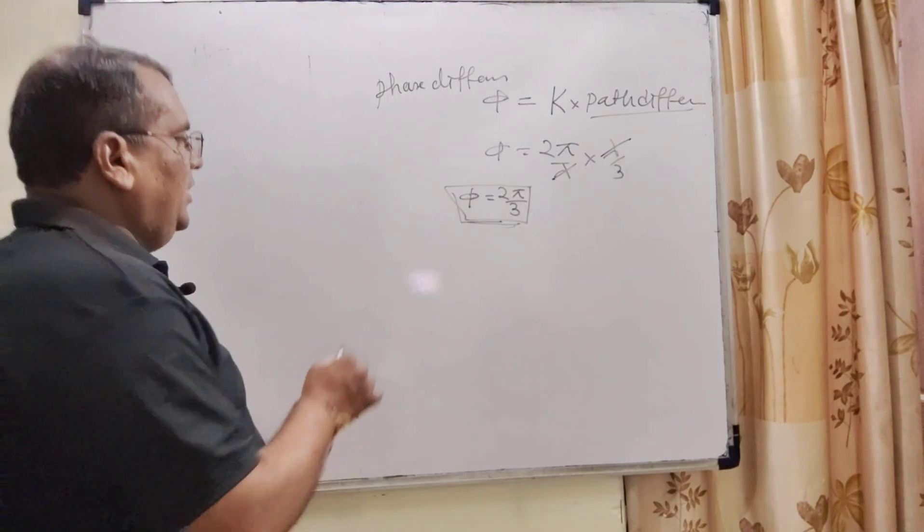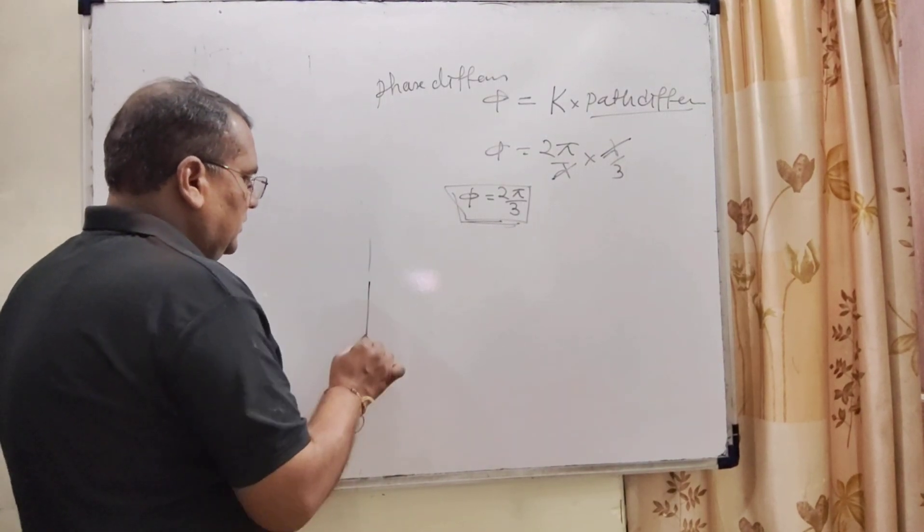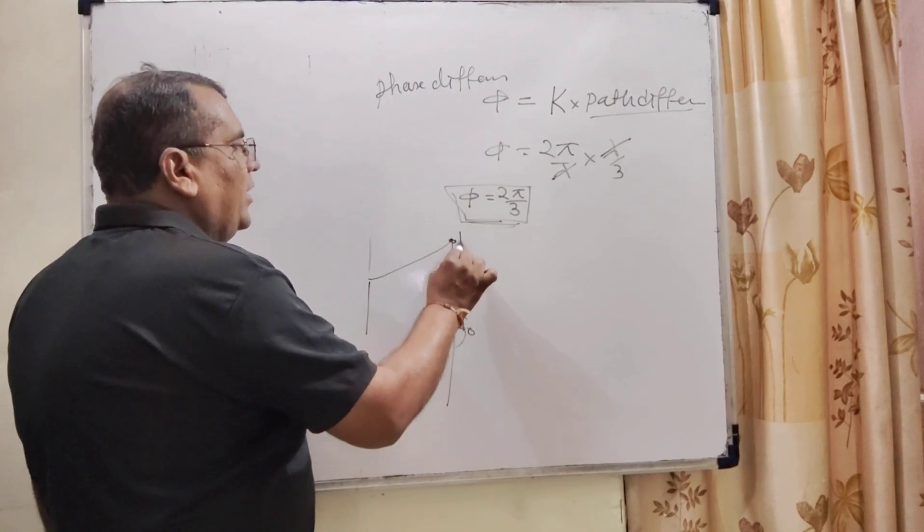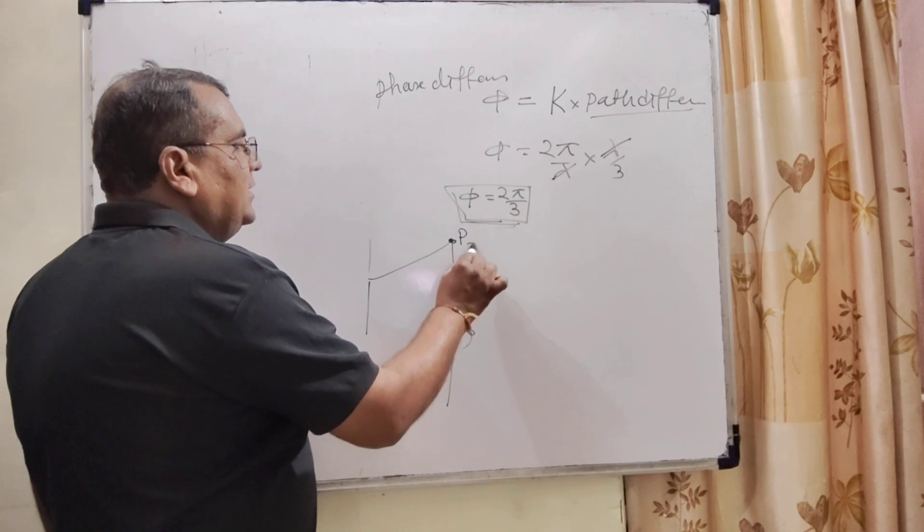Now, in the question it is given the central fringe intensity is I0, and here at the point P the intensity is I.